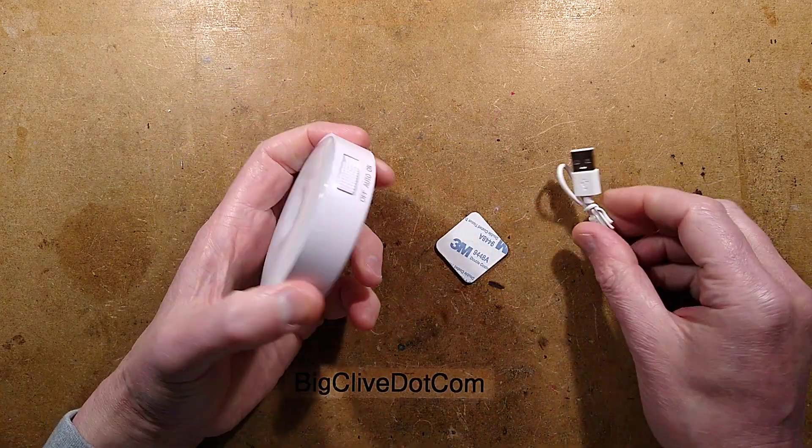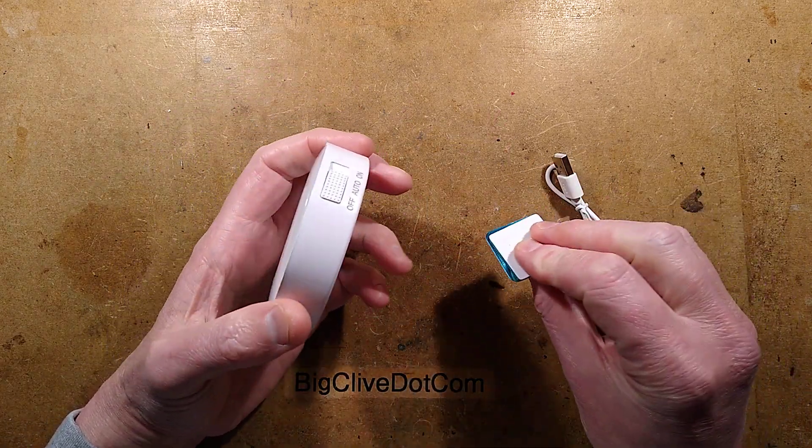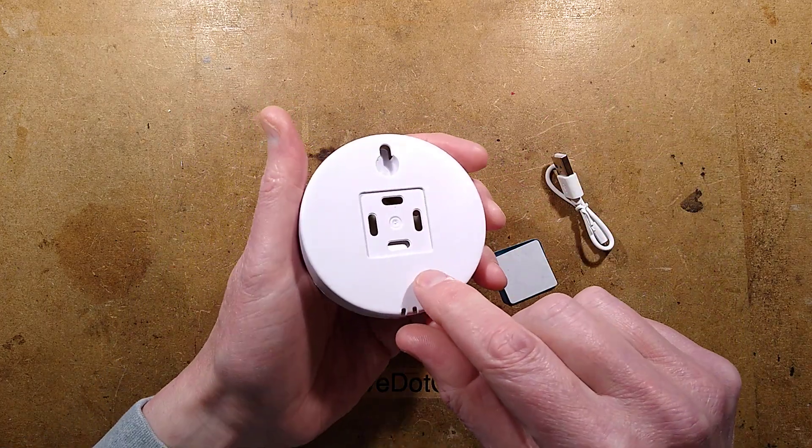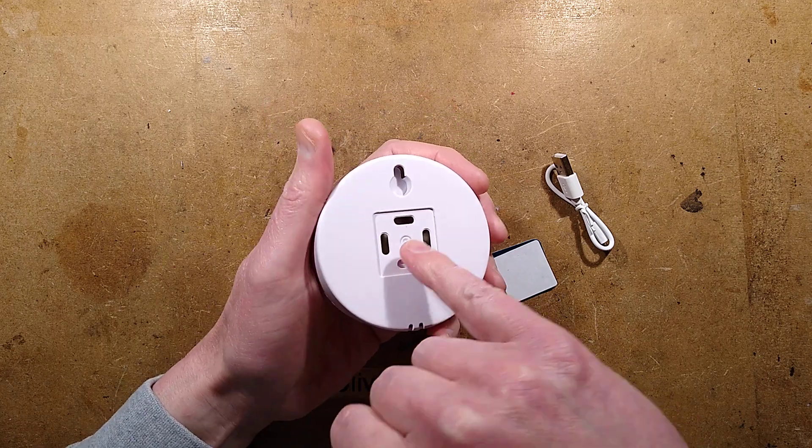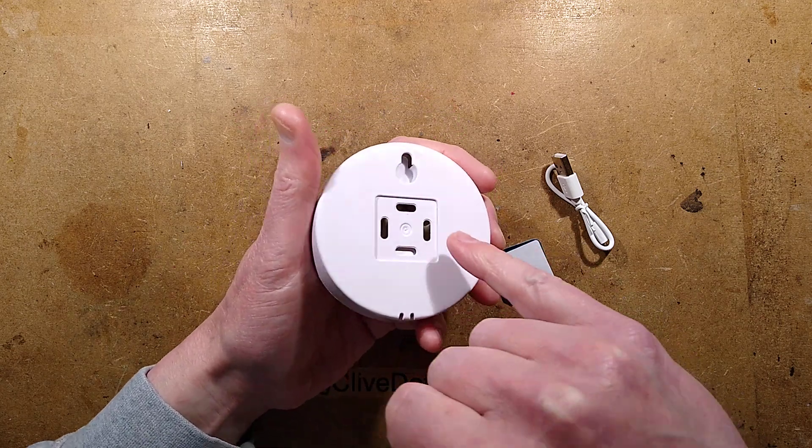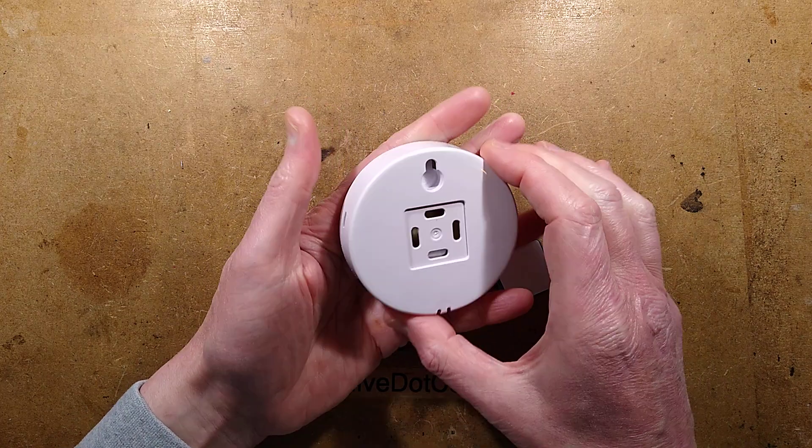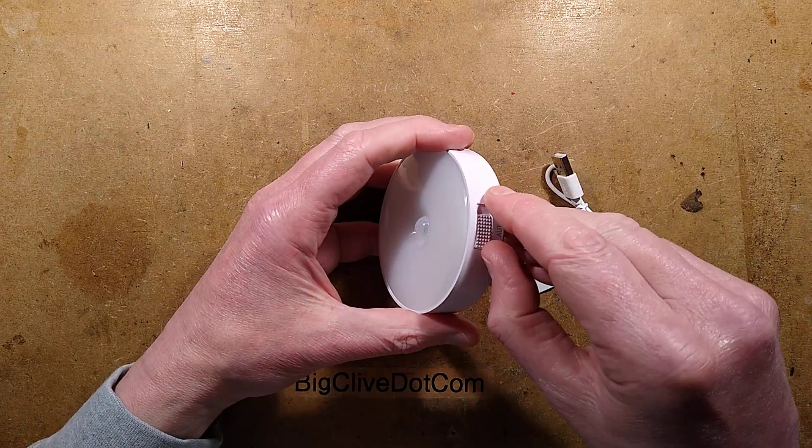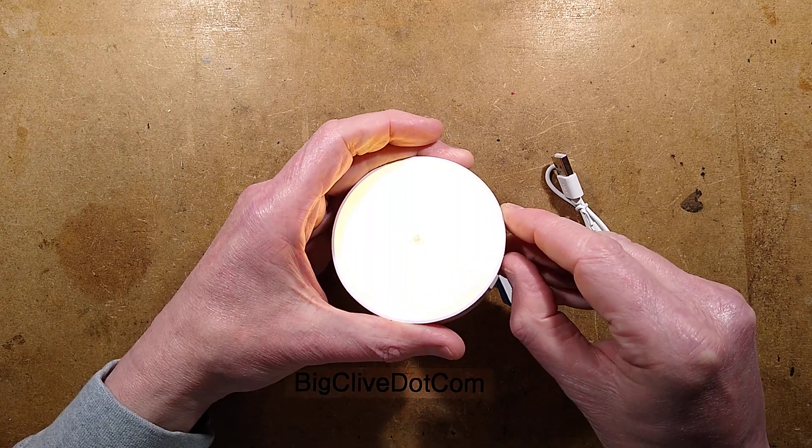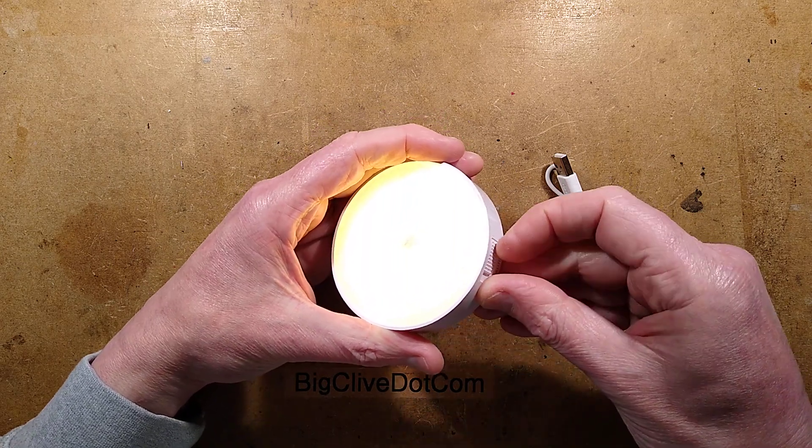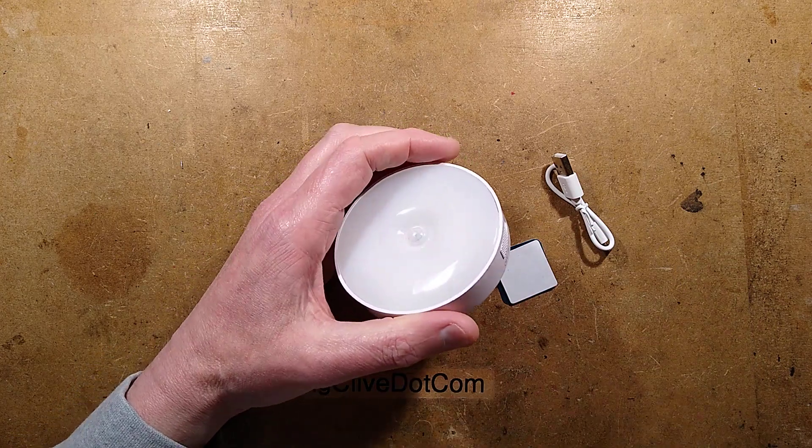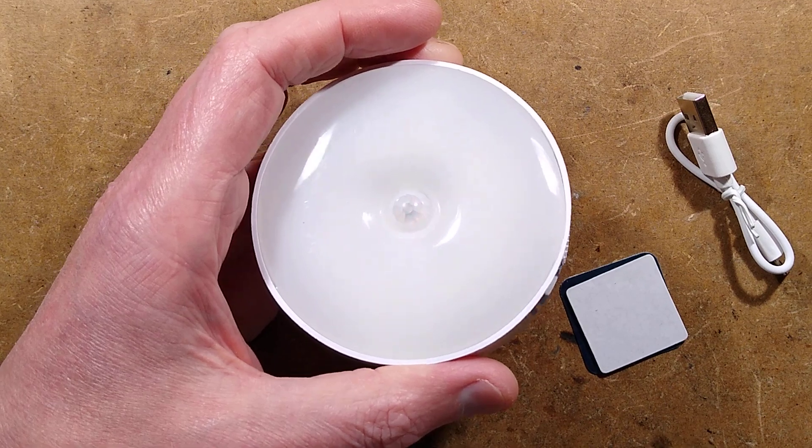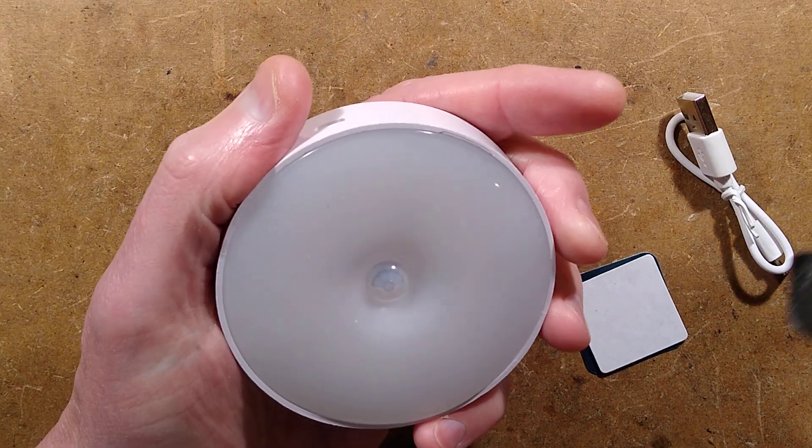This is a rechargeable unit with a little USB lead and a magnetic plate to attach it to surfaces so you can take it down and charge it. I'm seeing a lithium cell, an eye hole for hooking on, the charging point, and off/auto/on settings. It comes charged - let's get in close and spudger it open to see the circuitry.